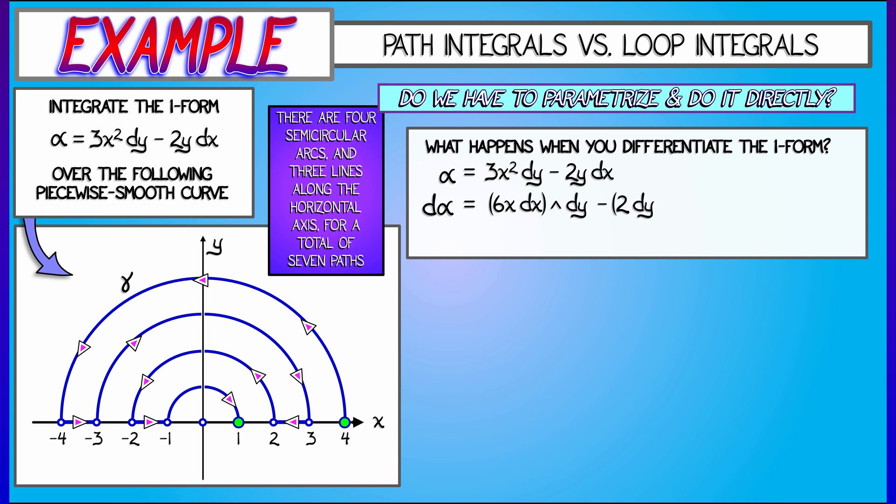It is 6x dx wedge dy minus 2 dy wedge dx. There's a common factor of dx wedge dy here. I'm going to have to be careful with the signs. When I factor out the dx wedge dy, I get a 6x plus 2 out in front.